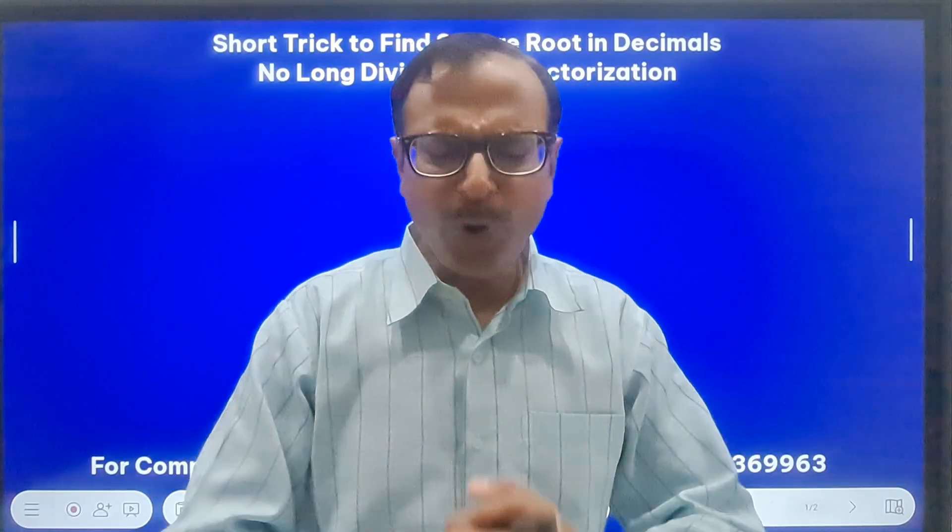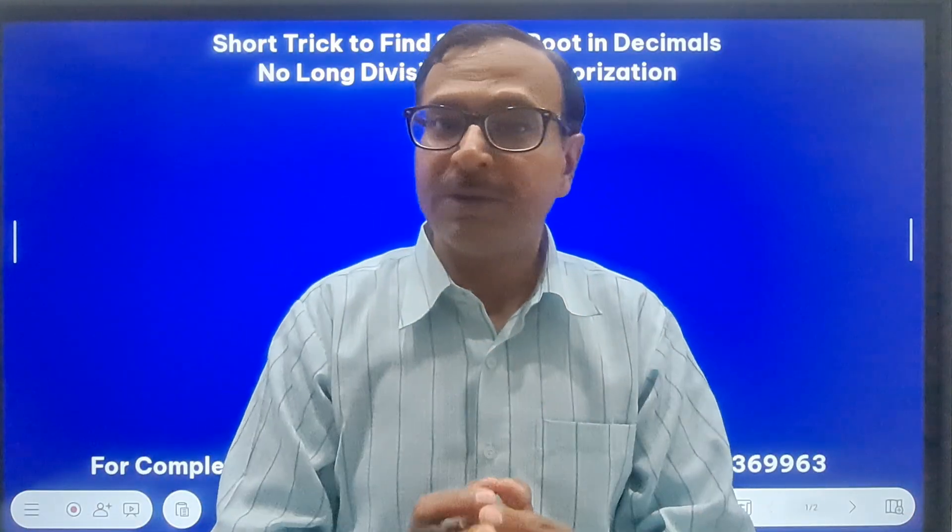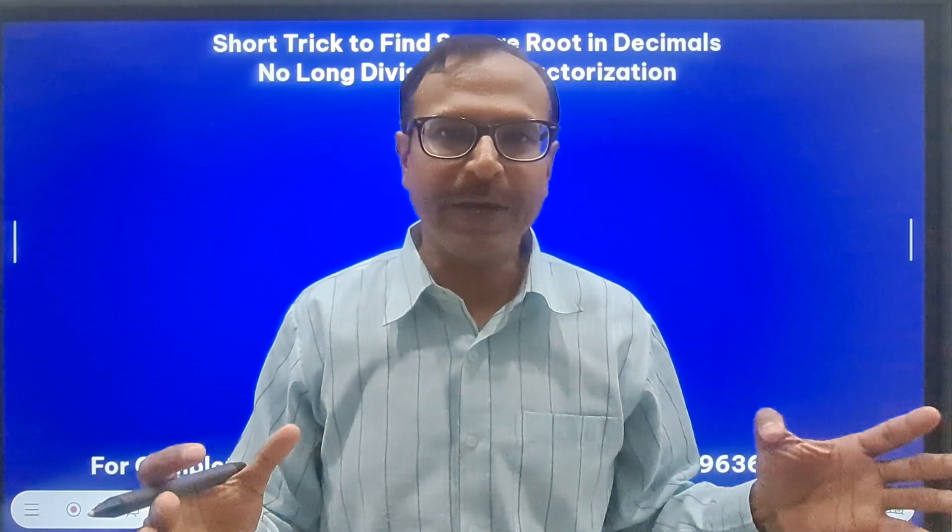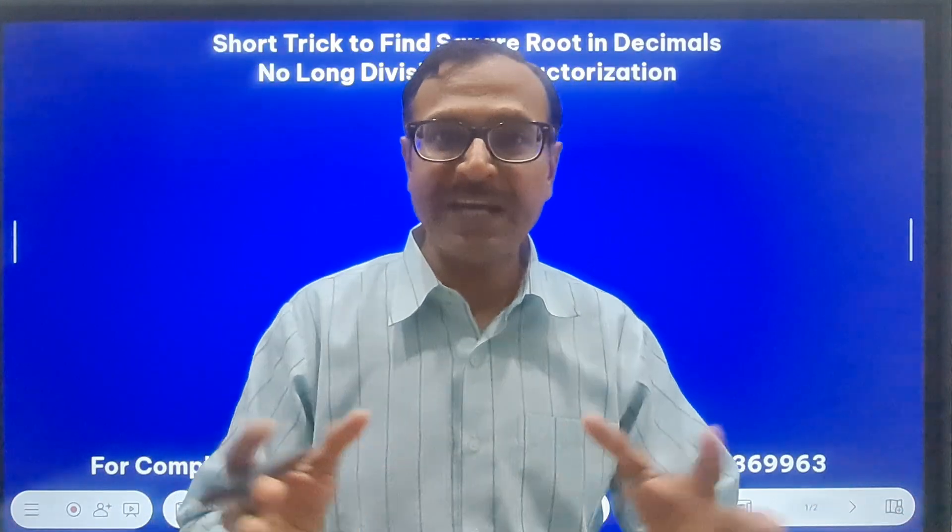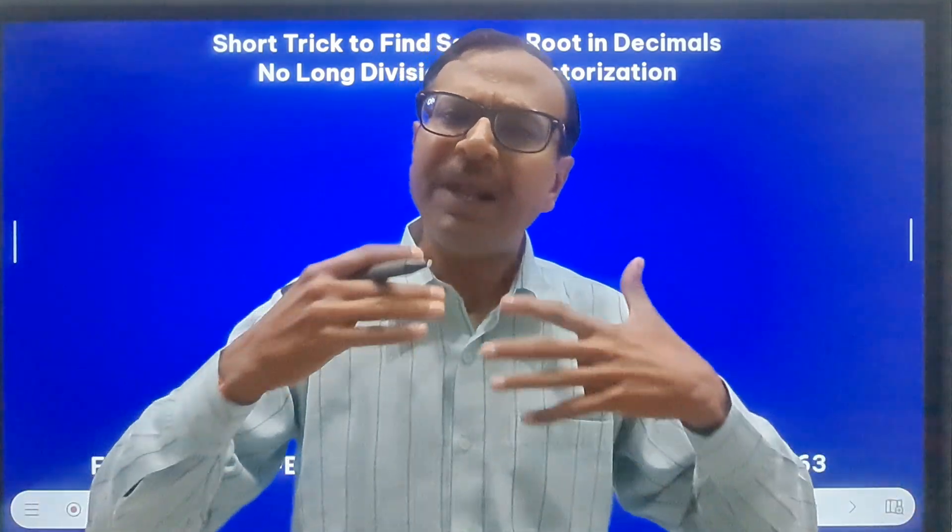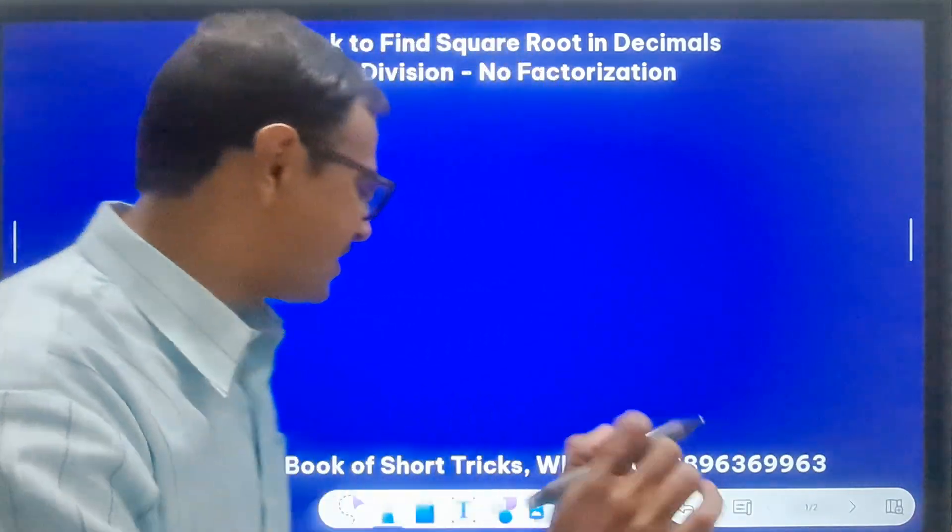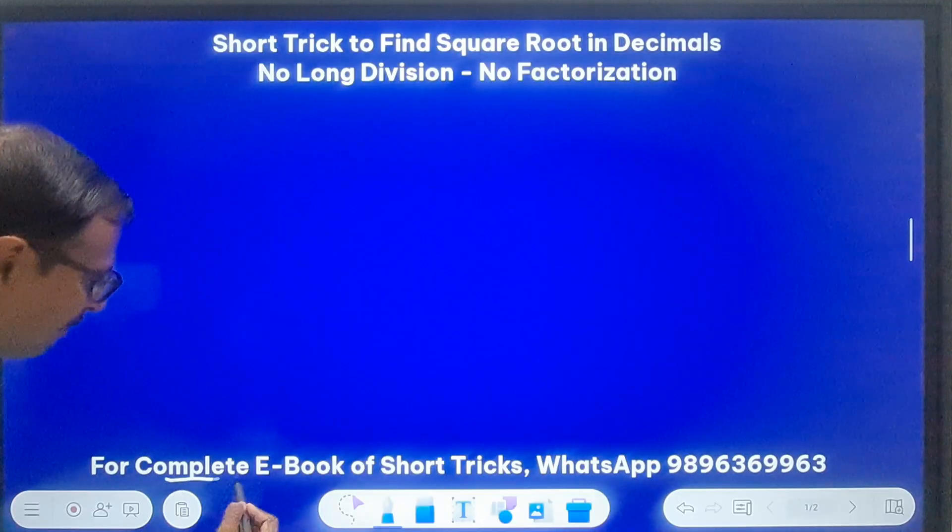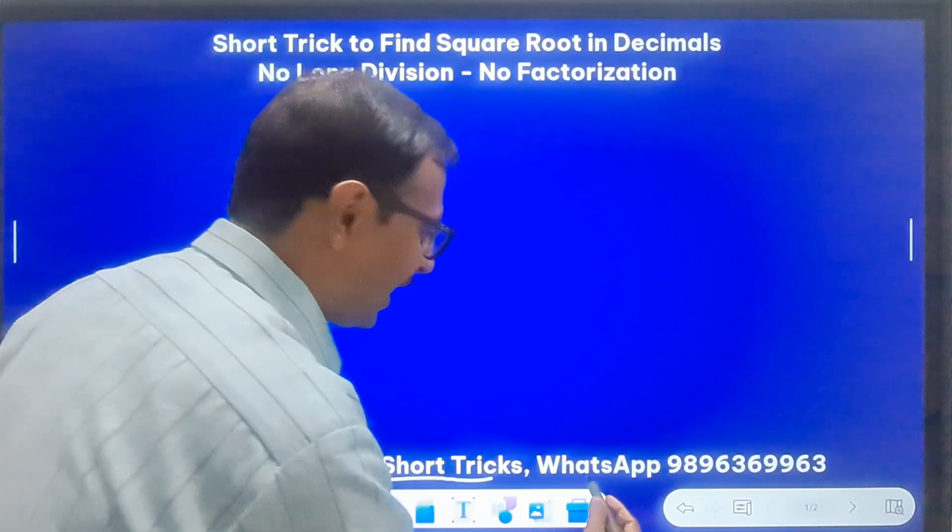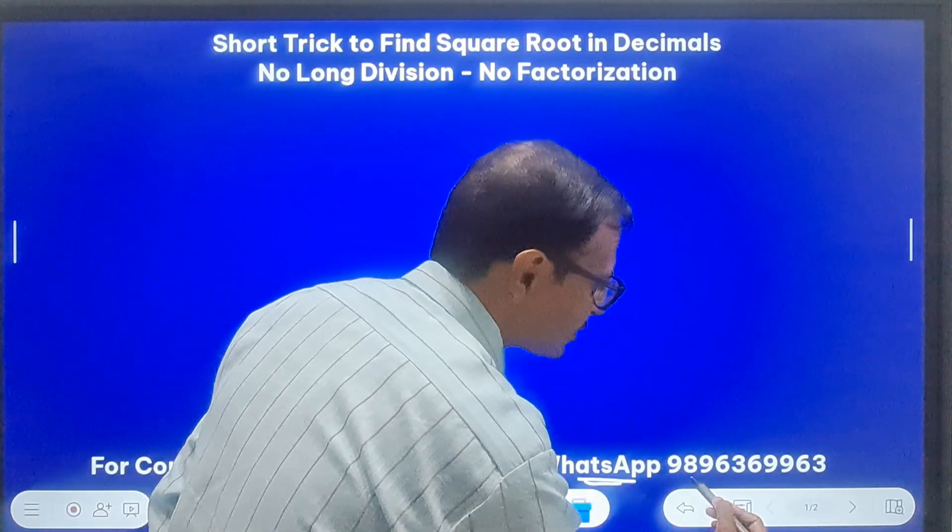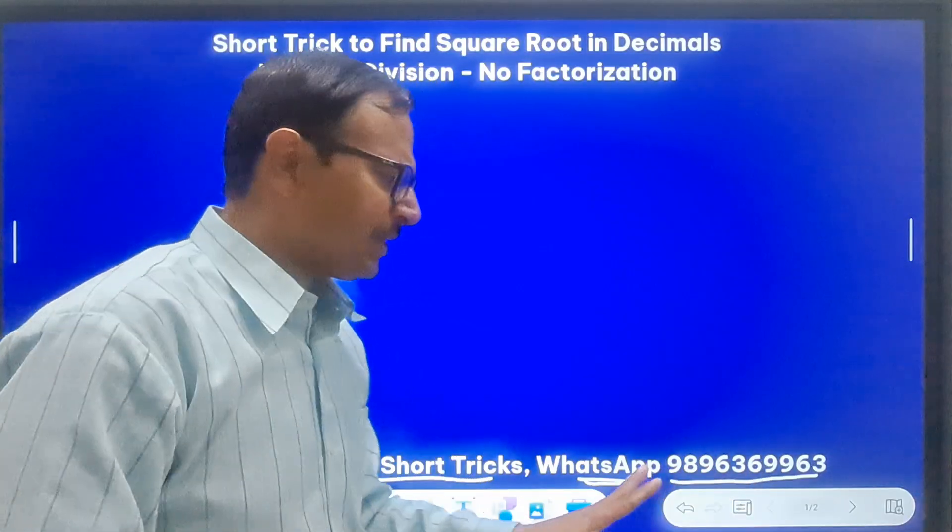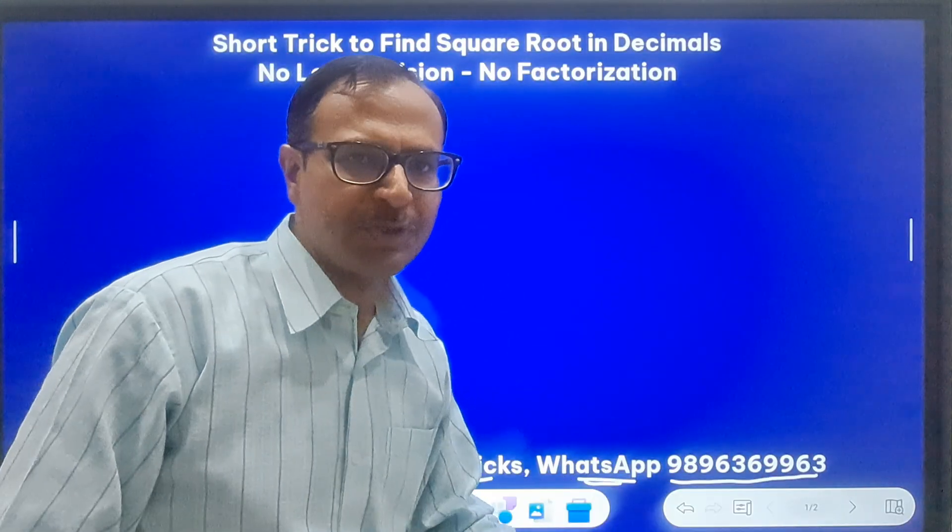And if you want a copy of all the short tricks at one place, I recommend it strongly. Spending only this much, you can actually have something which helps you at competitive level also, school level, college level, placement level - everywhere it will benefit you. This is the complete ebook of short tricks which comes with the reasoning course combo with video support. And you can send me a message on WhatsApp. This is the WhatsApp number 9896369963. The description also contains the information.